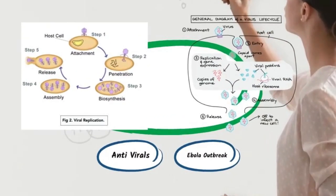Now moving on to the second learning outcome: the lytic cycle of a virus and latency. I'm going to talk through how viruses actually infect cells — the molecular basis of attachment and entry, and how they eventually kill the cell. Viruses do not undergo cell division; instead they infect a host cell and use it to replicate themselves. The virus's life cycle depends on its ability to successfully infect a host cell so that it may produce more copies.